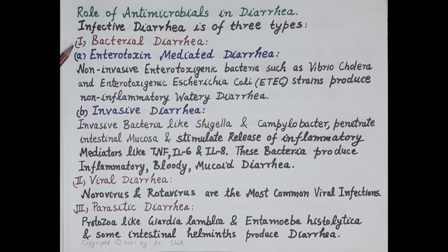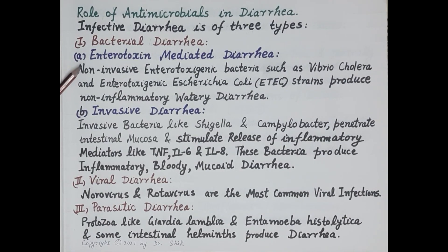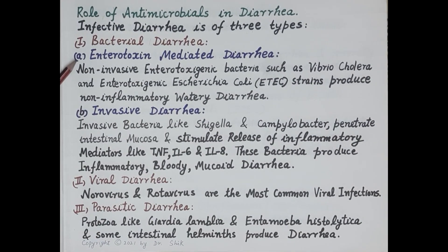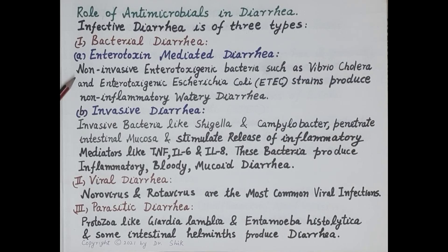Bacterial diarrhea is either produced by non-invasive bacteria or invasive bacteria. Non-invasive bacteria do not invade or enter intestinal mucosal epithelial cells; however, these bacteria produce toxins which mediate non-inflammatory watery diarrhea. Non-invasive enterotoxigenic bacteria such as Vibrio cholerae and enterotoxigenic E. coli strains produce non-inflammatory watery diarrhea.